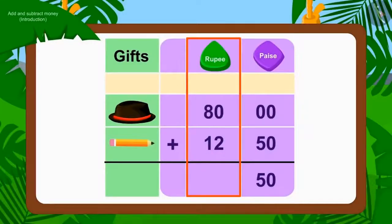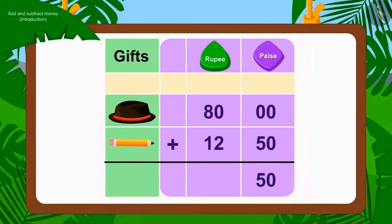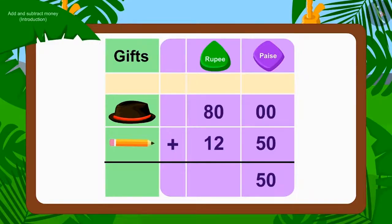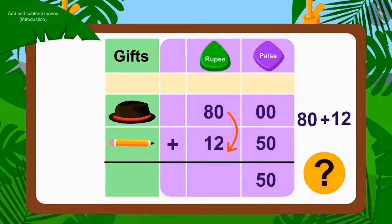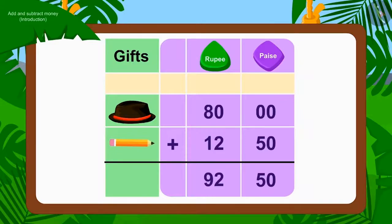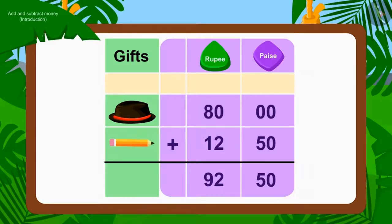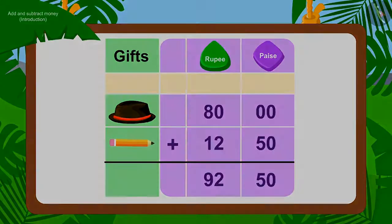Now, we will add the rupee numbers. The cap here costs Rs. 80.00 and the price of the pencil is Rs. 12. 80 added to 12 is Rs. 92.00. In this way, the total value of both items became Rs. 92.50.